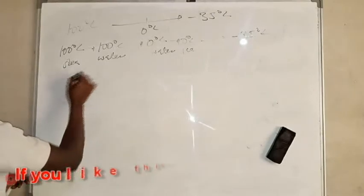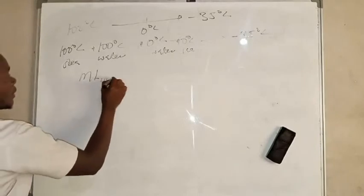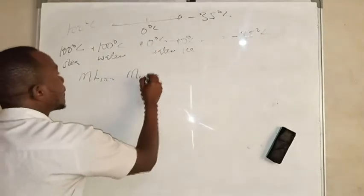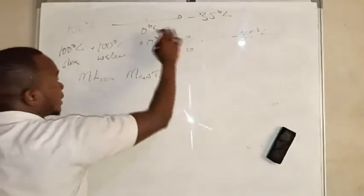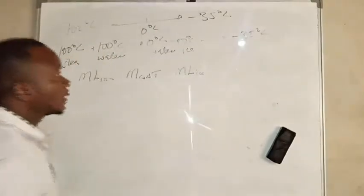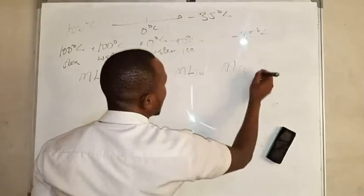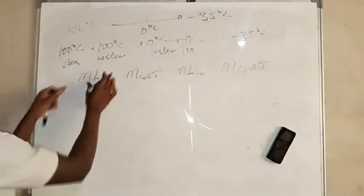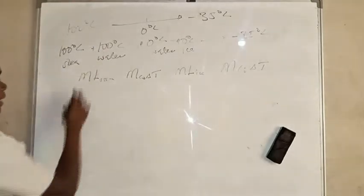Finally, the ice cools from zero to negative 35 degrees Celsius. For each stage we apply the appropriate equation: Q = mL for phase changes and Q = mcΔT for temperature changes. For steam condensation we use mL, for water cooling we use mcΔT for water, and for water freezing we use mL for ice, then mcΔT for ice cooling from zero to negative 35 degrees Celsius.